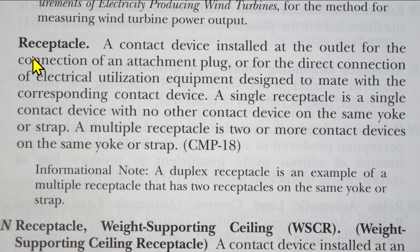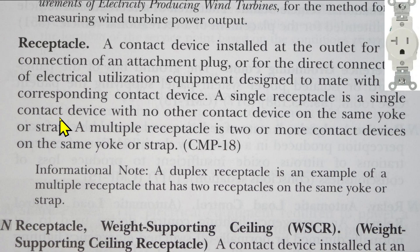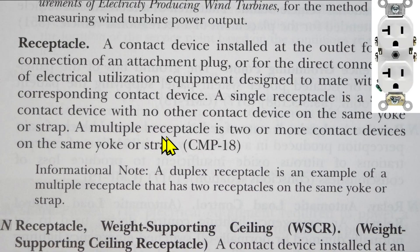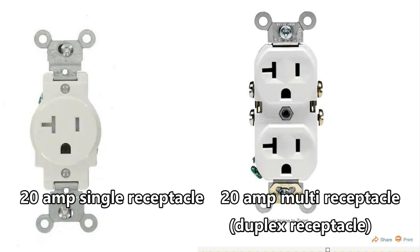Here's the definition of receptacle in the 2023 NEC: a contact device installed at the outlet for the connection of an attachment plug or for the direct connection of electrical utilization equipment designed to mate with the corresponding contact device. A single receptacle is a single contact device with no other contact device on the same yoke or strap. A multiple receptacle is two or more contact devices on the same yoke or strap.